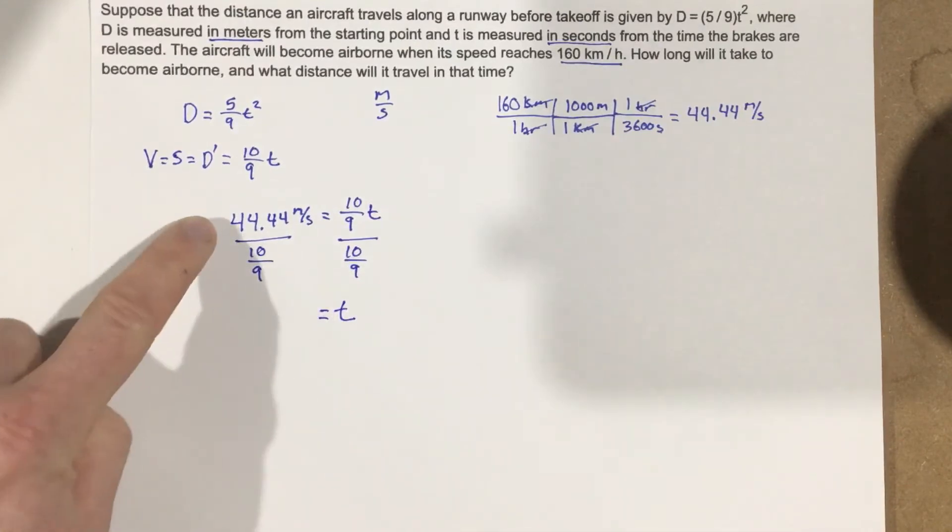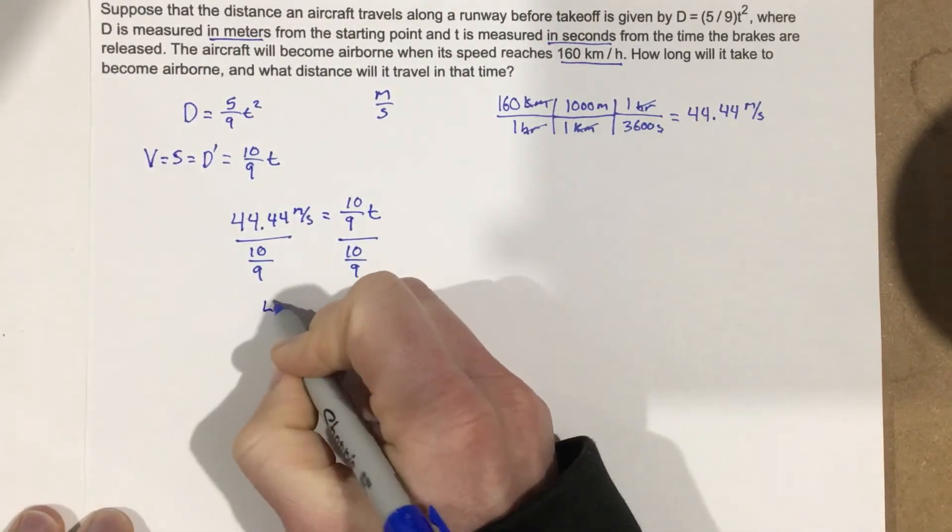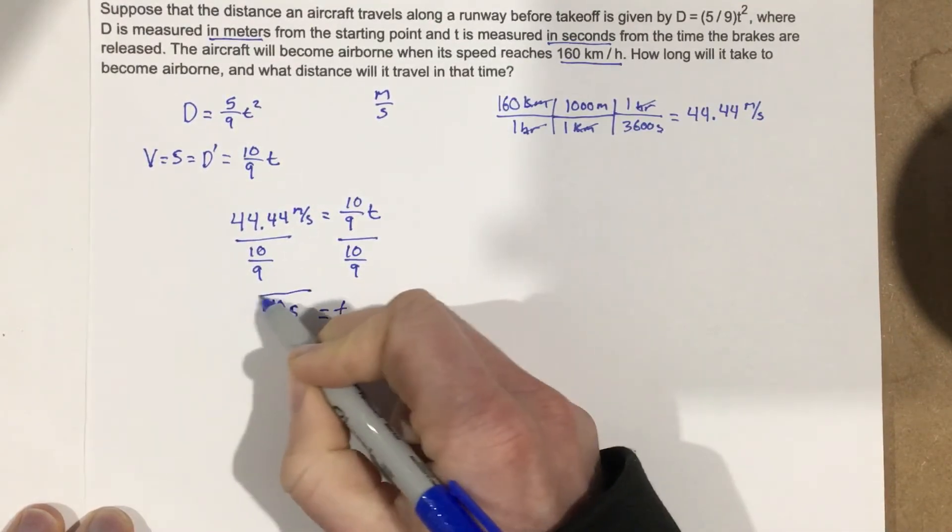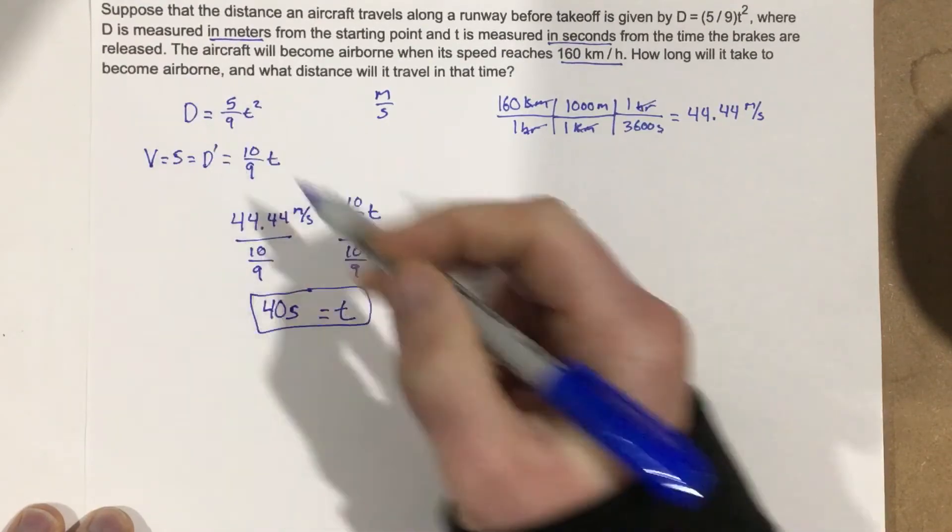Now make sure you use the full version of this number when you do the problem. So we're going to divide by 10 divided by 9 and we end up with 40 seconds. So the time for us to become airborne is going to be 40 seconds.